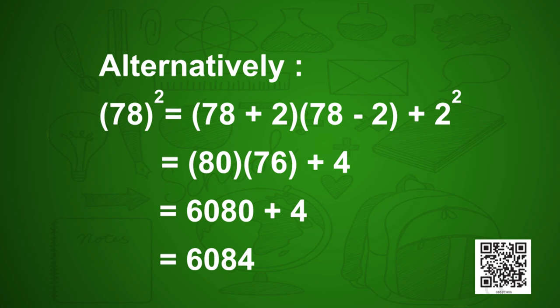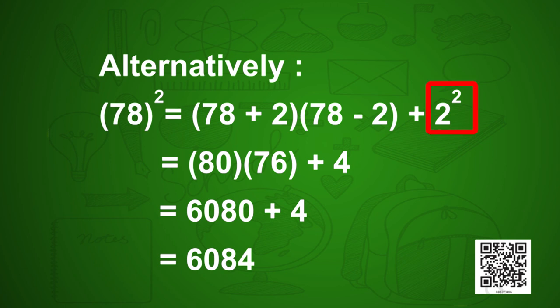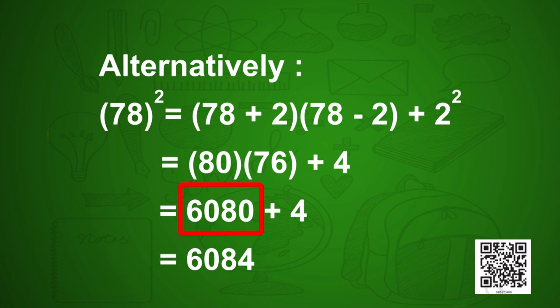Alternatively, for 78²: adding 2 to 78 gives 80 and subtracting 2 gives 76. So 80 × 76 + 2² = 6080 + 4 = 6084.